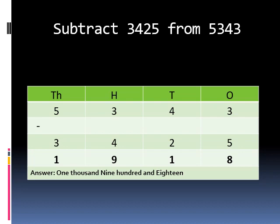First, we will start with one's place. 3 minus 5. 3 is smaller than 5, so we have to borrow from 4. 4 becomes 3 and 3 becomes 13. 13 minus 5 is 8.